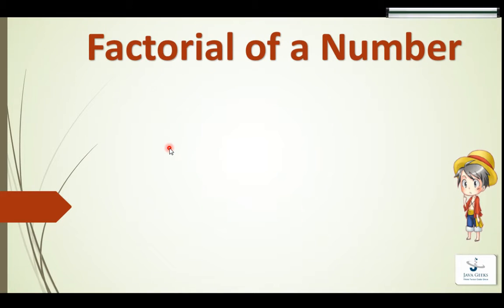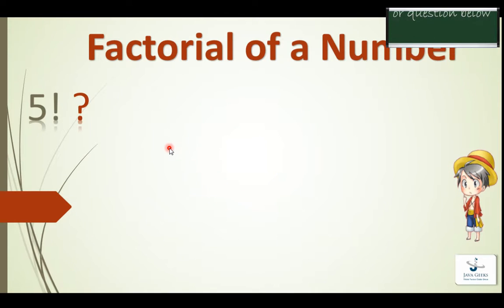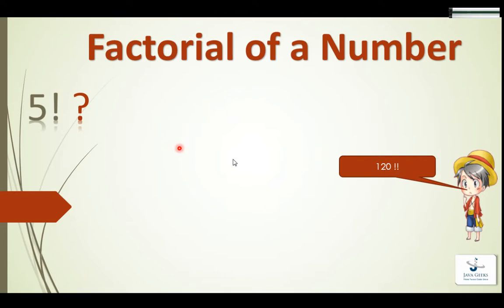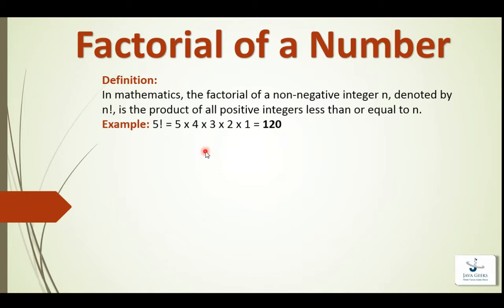Hello friends, today we will see how to find out the factorial of a number. So what's the answer? 5 factorial? 120, absolutely correct. So first let's see what is factorial of a number.